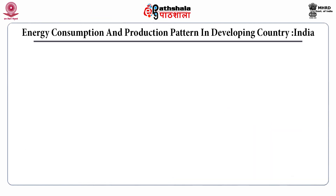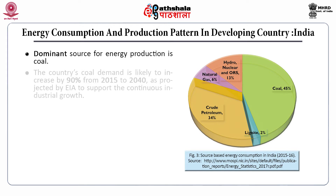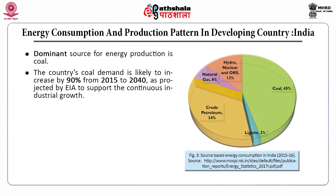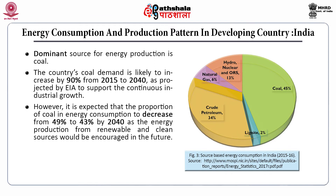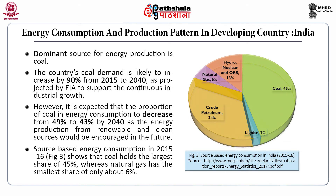Now, the energy consumption and production pattern in developing countries, taking India as an example. The dominant source for energy production in India is coal. The country's coal demand is likely to increase by 90% from 2015 to 2040, as projected by the International Energy Agency, to support continuous industrial growth. However, it is expected that the proportion of coal in energy consumption will decrease from 49% to 43% by 2040, as energy production from renewable and clean sources would be encouraged. Source-based energy consumption in 2015–16 shows coal holds the largest share of 45%, whereas natural gas has the smallest share of about 6%.